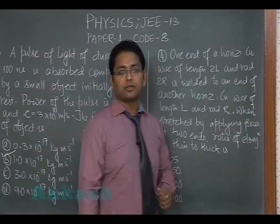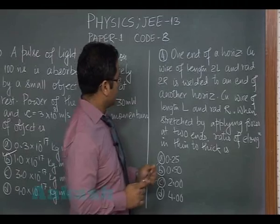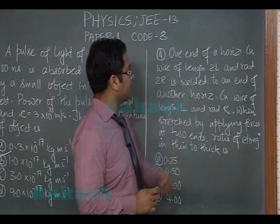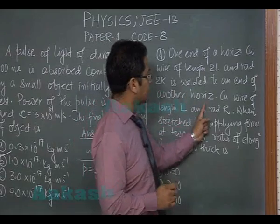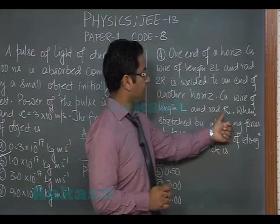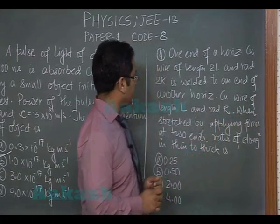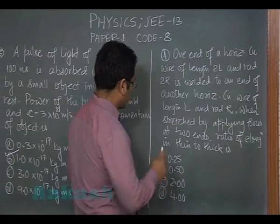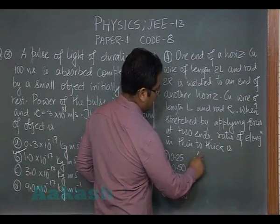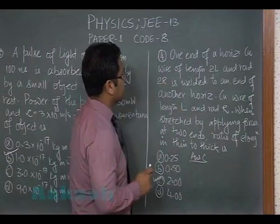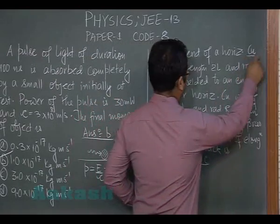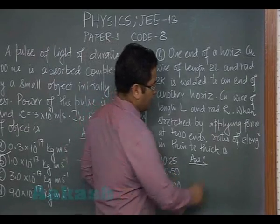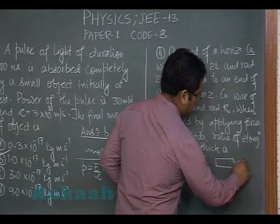Question four is from Young's modulus and properties of bulk matter. One end of a horizontal copper wire of length 2L and radius 2r is welded to an end of another horizontal copper wire of length L and radius r. When stretched by applying forces, the ratio of elongation in the thin wire to the thick wire has to be found. Both wires are made of copper, so the Young's modulus of elasticity is the same.